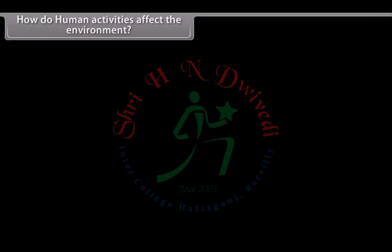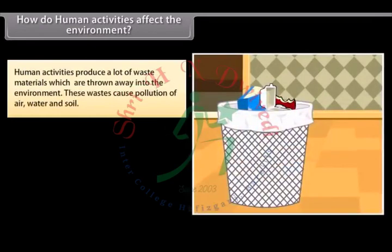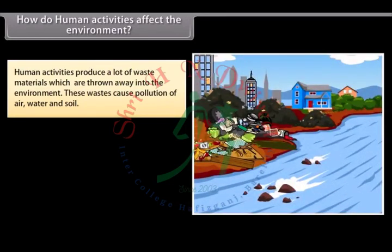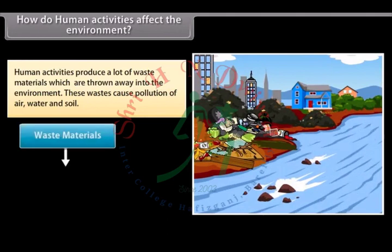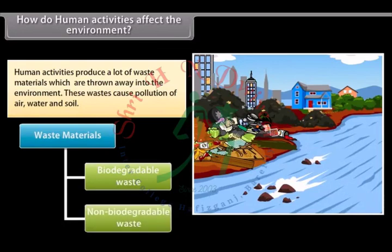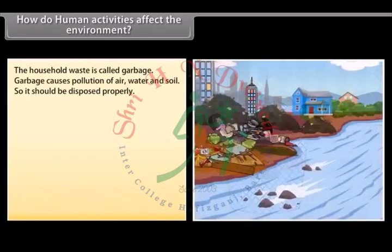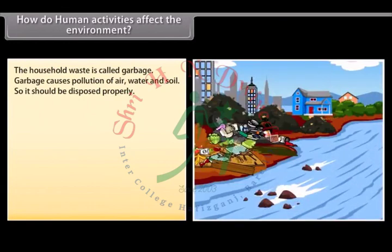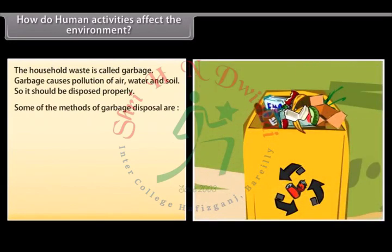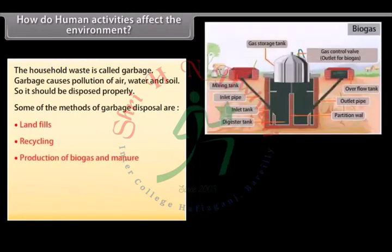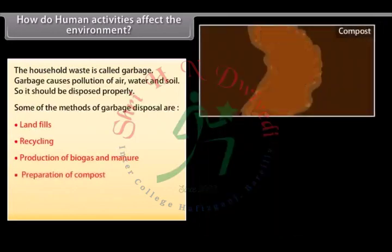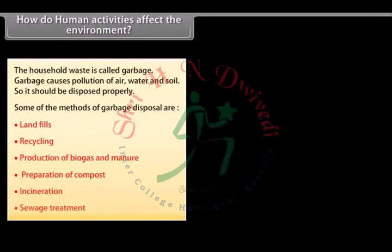Human activities produce a lot of waste materials which are thrown into the environment, causing pollution of air, water, and soil. The waste materials produced are of two main types: biodegradable waste and non-biodegradable waste. The household waste is called garbage, and it should be disposed of properly. Some methods of garbage disposal are landfills, recycling, production of biogas and manure, preparation of compost, incineration, and sewage treatment.